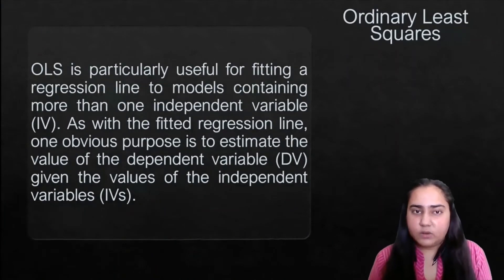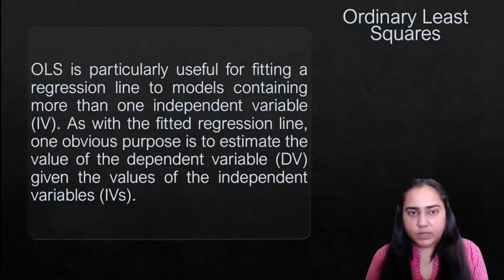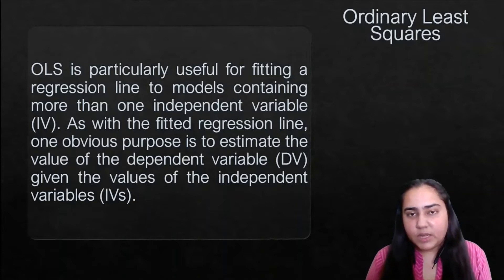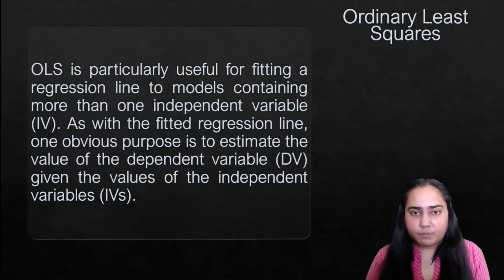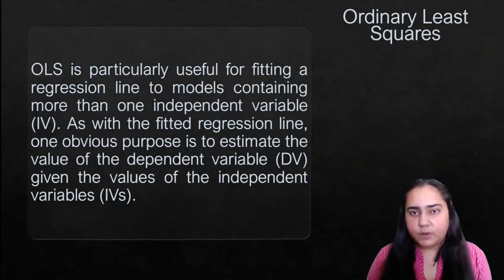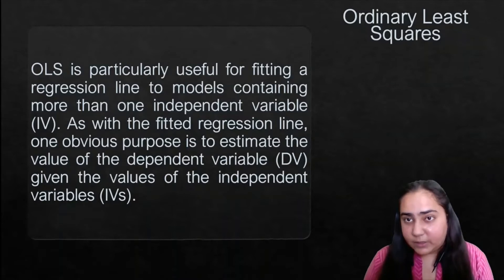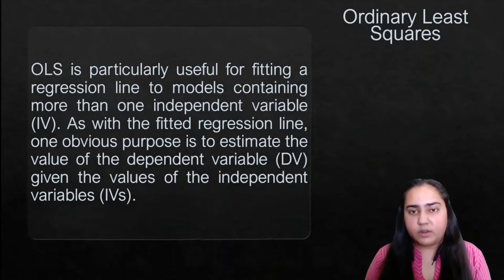OLS is particularly useful for fitting a regression line to models containing more than one independent variable. With the fitted regression line, one obvious purpose is to estimate the value of the dependent variable given the values of the independent variables. Usually it's not just about creating a regression line — most of the time it's about how that regression line is going to help you make predictions. If you're given the values of all your independent variables, how do you make predictions about your dependent variable? That is the main purpose of creating a regression line, and OLS works very well if you have several independent variables.